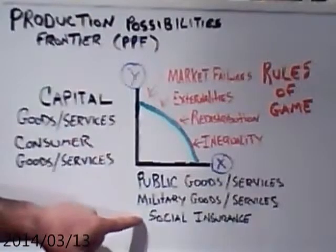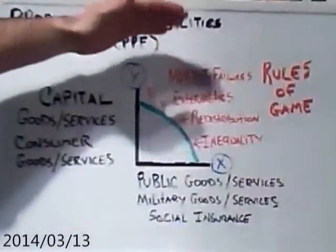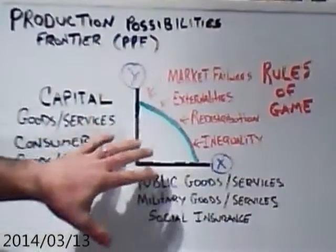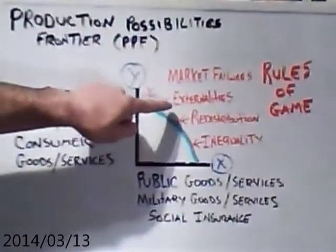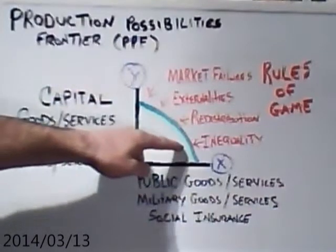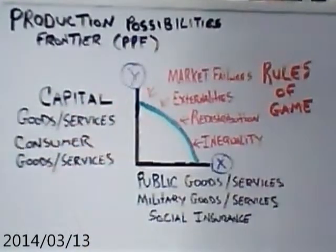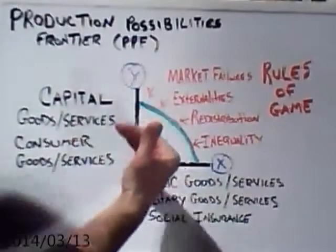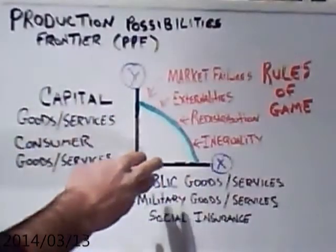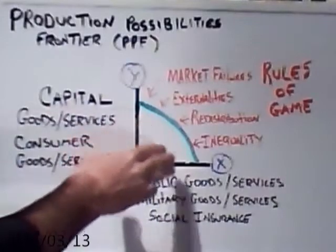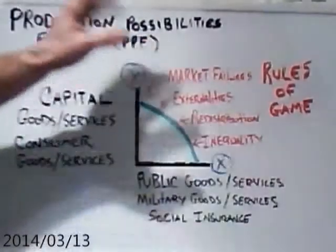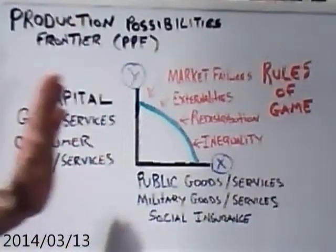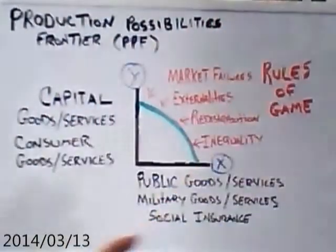That's where we end up with our social insurance, and that's the basis for these other pressures on the production possibilities frontier from expanding, which are market failures, externalities, redistribution, and inequality. These are the four main reasons why statutes and legislation are passed that prevent the production possibilities frontier from expanding and encourage continued redistribution of the existing pie. We're going to go through all of these and explain them, and give a prescription for growth.